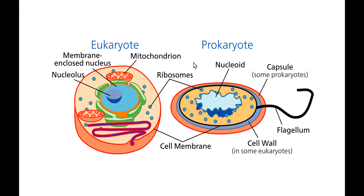As we can see as well, our eukaryotes have a mitochondria — also a membrane-bound organelle where respiration takes place. Our prokaryotic cells don't have a nucleus, so the DNA is found in a nucleoid. The cell wall, which some eukaryotes such as plant cells have, is present in all prokaryotes, and as we can see there, there's the flagella or the tail-like structure.